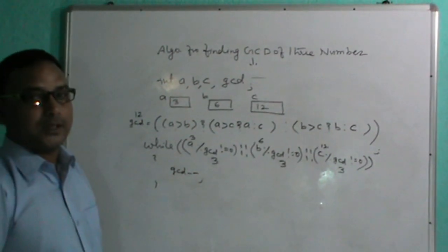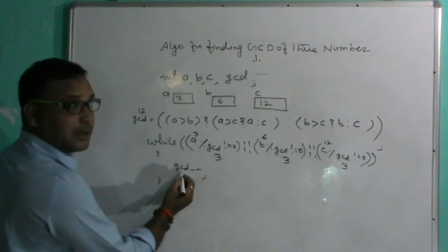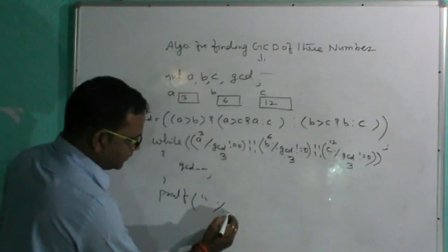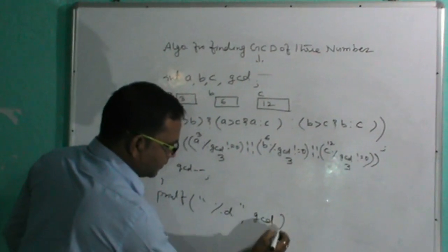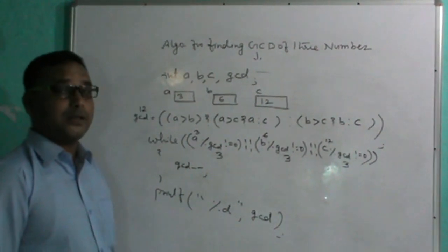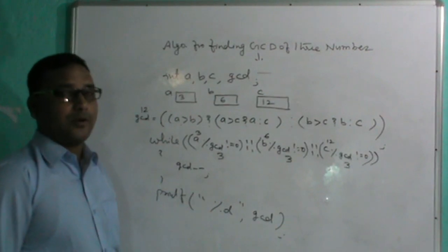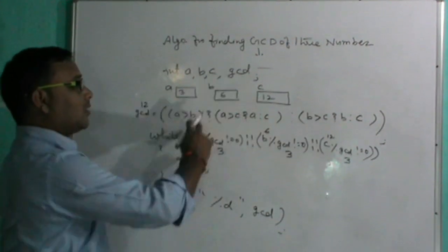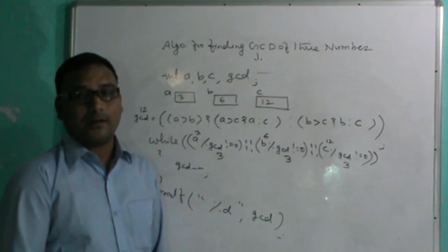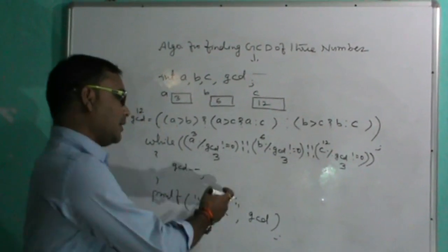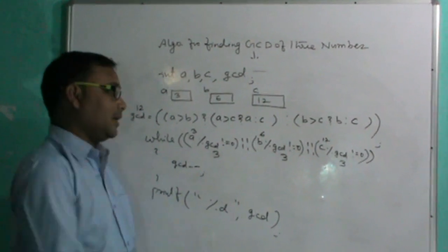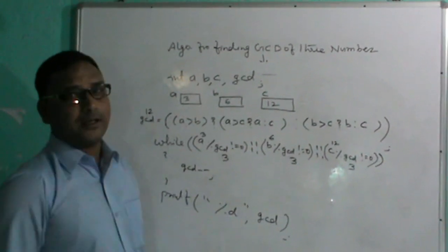The output is printed from the GCD variable. With this logic you can design the algorithm and also the function — we will discuss the function later. This is the logic for finding GCD of 3 numbers. Try to implement it — it's very simple. You can use any language: C, C++, or Java.